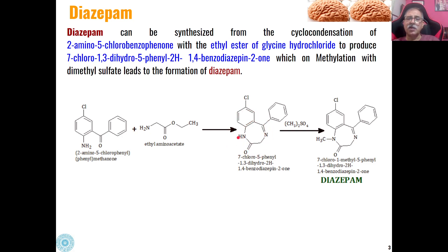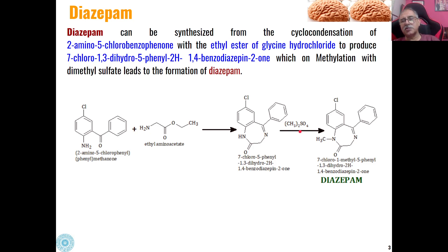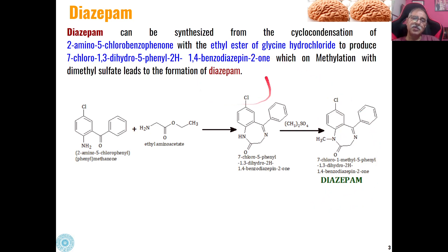Then N-methylation of this 1,4-benzodiazepine-2-one derivative with dimethyl sulfate — dimethyl sulfate being a very good methylating agent — will lead to N-methylation. So the N-methylated 1,4-benzodiazepine-2-one derivative is called Diazepam. Diazepam can be easily synthesized from nucleophilic addition-condensation of amino and carbonyl systems.